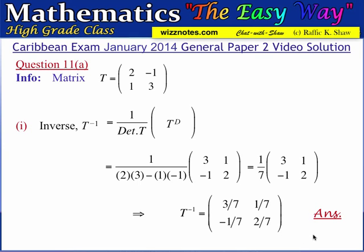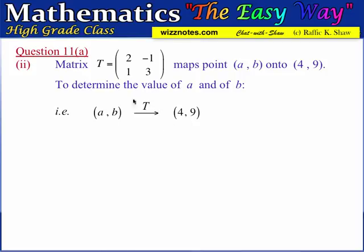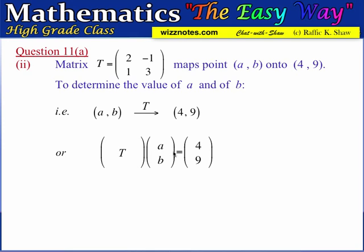Moving down to part 2: we are told that the matrix T maps the point (A, B) onto the point (4, 9), and we must find the values of A and B. This is done by multiplying matrix T by the column vector [A, B] to get the column vector [4, 9].